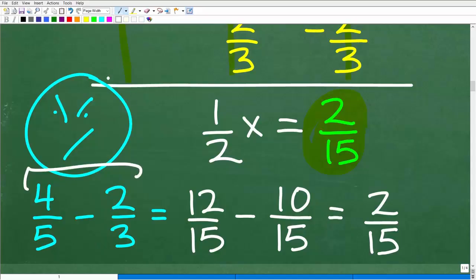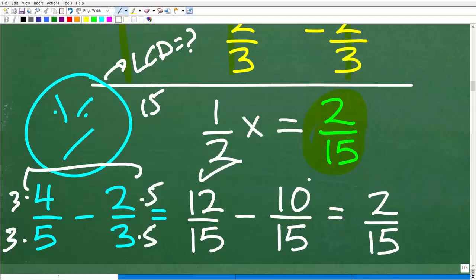Now the answer is two-fifteenths. But what you got to do is you got to go over here and do some side work. Four-fifths minus two-thirds. So we got to figure this out. Four-fifths minus two-thirds. What's the LCD? That's 15. So now I got to change the denominators to 15. And then so here I got to multiply both the numerator and denominator by three. So this is 12-fifteenths. And then here I'm going to multiply the numerator and denominator by five. So this is 10-fifteenths. Now I can subtract the numerators. 12 minus 10 is two. So it's two-fifteenths.